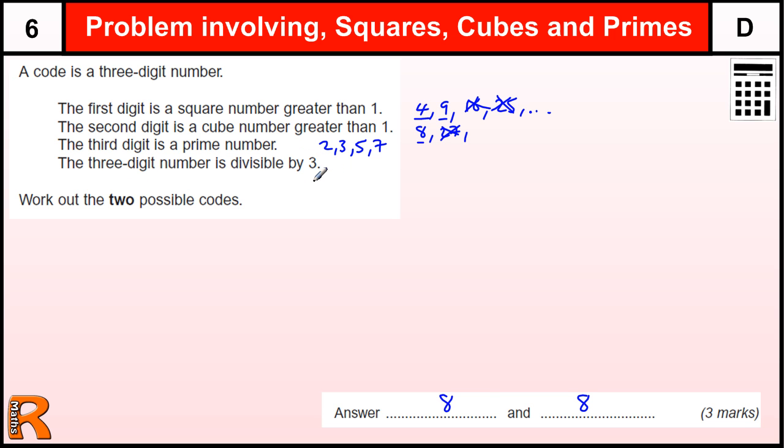And our 3-digit number is divisible by 3, so that means that the digits add up to a multiple of 3. That's the quick way of doing it.